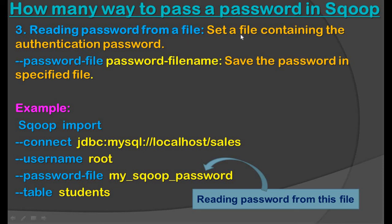The third option is reading the password from a file. We set a file that contains the correct authentication password. For example, to import a table: `scoop import --connect jdbc:mysql://localhost/sales --username root --password-file my_scoop_password --table student`. We specify the path to the password file using `--password-file`, and Scoop reads the password from that file.